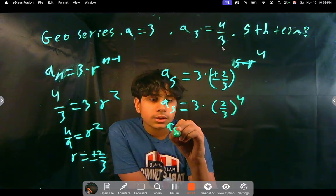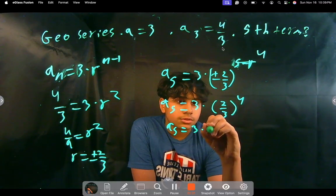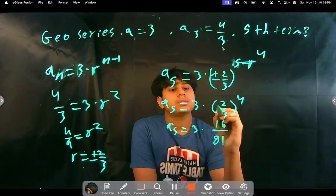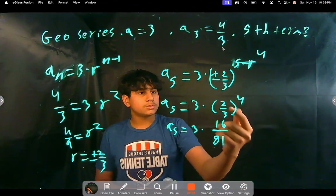So then a of 5 equals 3 times 2 to the 4th is, well, 3 to the 4th is 81, 2 to the 4th is 16, right? So this is correct, right? 9 squared and then this is 4 squared, yeah.